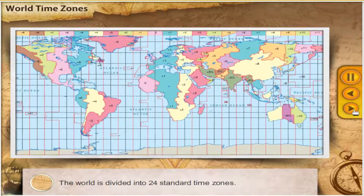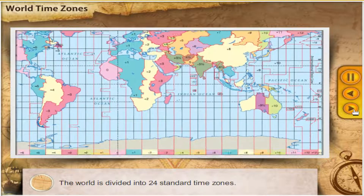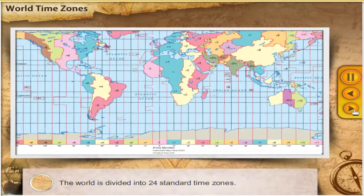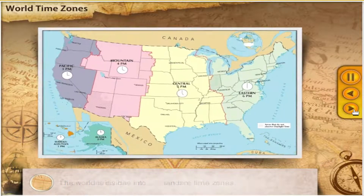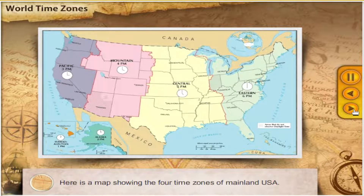The world is divided into 24 standard time zones. Large countries have more than one time zone. Here is a map showing the four time zones of mainland USA.